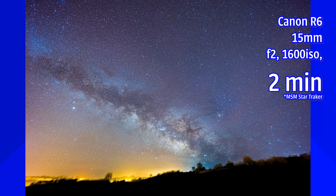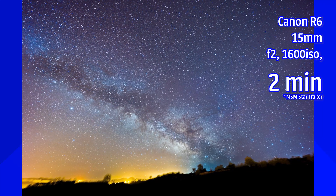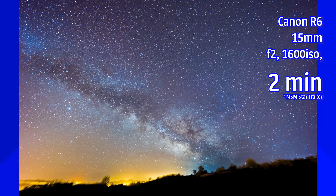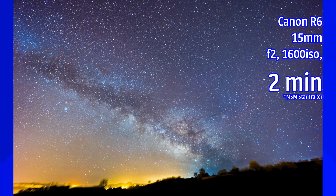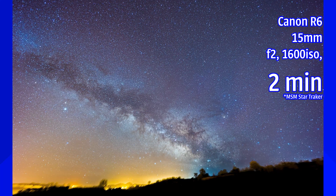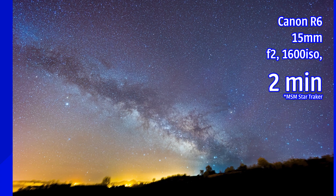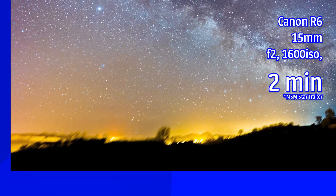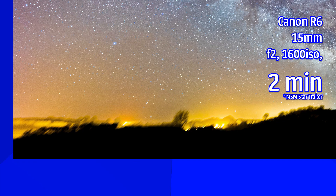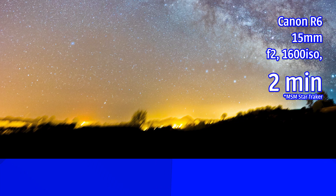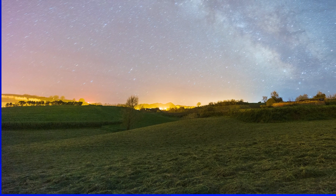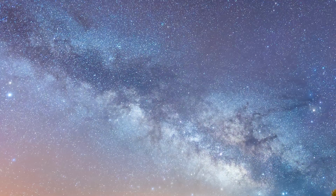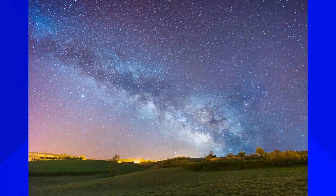In theory, with perfect polar alignment, even longer shutter speeds are possible. Going from a traditional 30 seconds to two full minutes, I gained two extra stops of light, and had the luxury of reducing ISO from 3200 to 1600 — one less stop of noise. Since the camera was following the sky, the landscape got motion blur, so I made a second two-minute exposure with the star tracker off to blend the two shots in Photoshop.